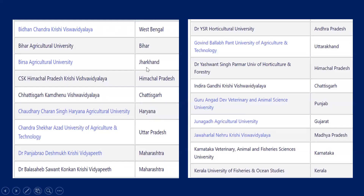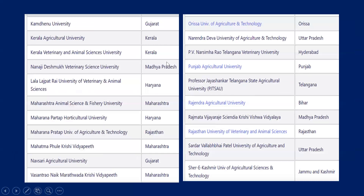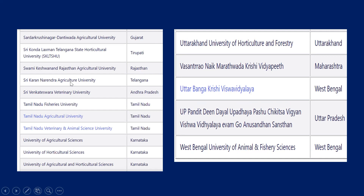Here you can see different states. In Andhra Pradesh, there is another university — Dr. Vyassar Horticulture University. Similarly, you can see other universities from different states. In Hyderabad, P.V. Narasimhara Telangana Veterinary Science. One more university from Telangana state is Sri Karan Narendra Agricultural University. In Andhra Pradesh, Sri Venkateswara Veterinary University is also accepting the score. Like this, different states are providing opportunity based on the CUET score to get admission into ICAR courses.